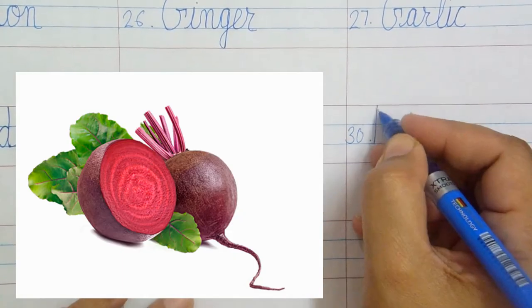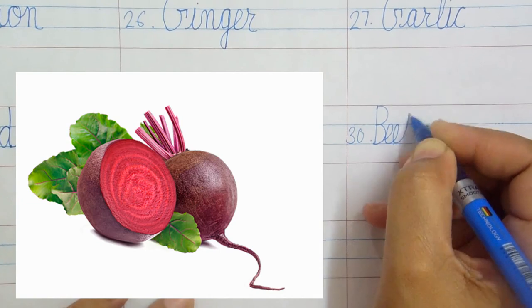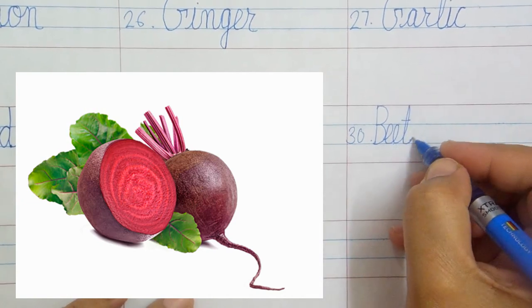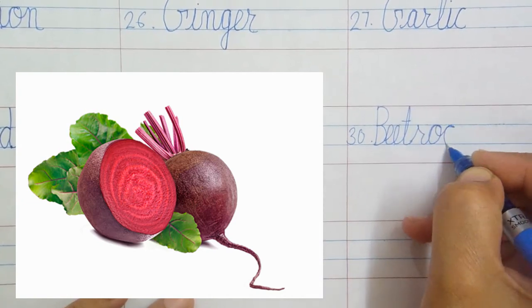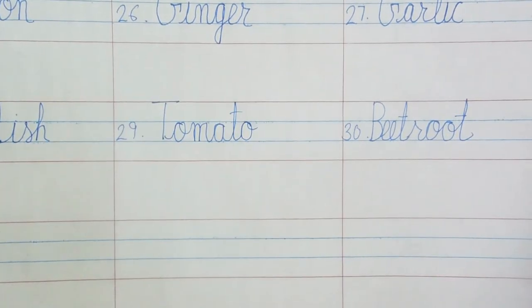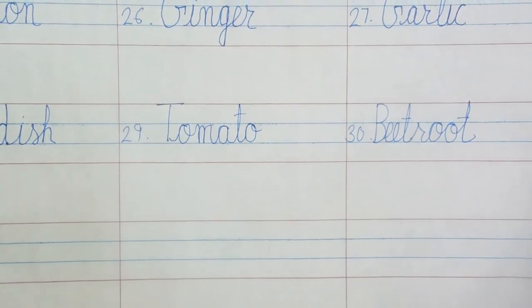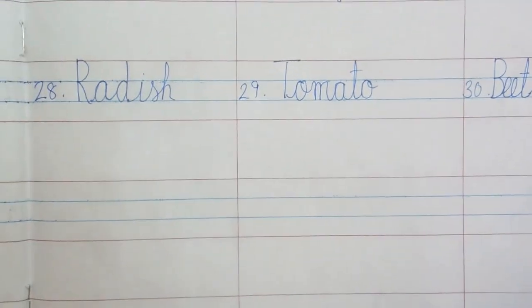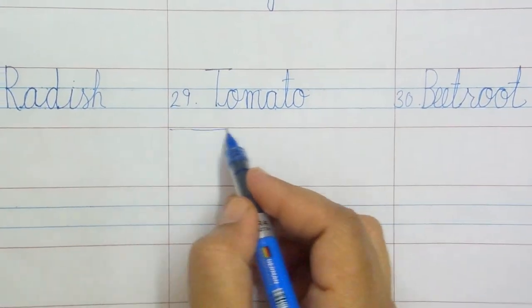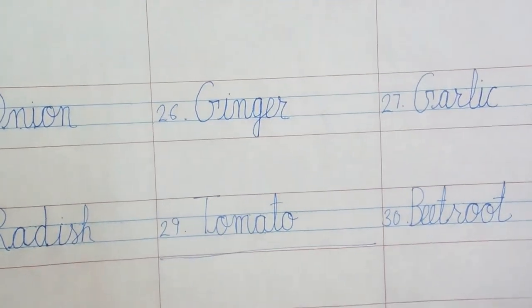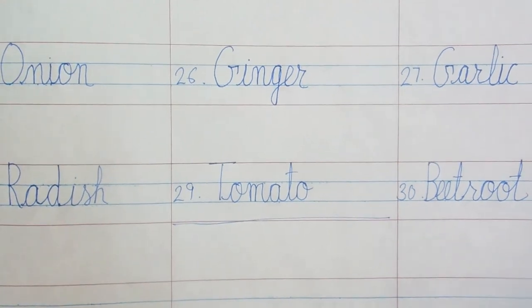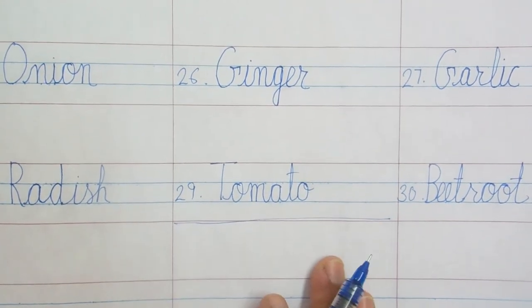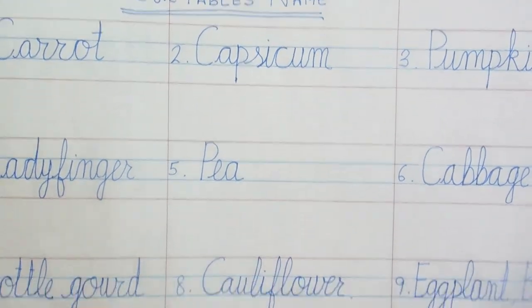Beetroot: B-E-E-T-R-O-O-T, beetroot. So friends, these are names of vegetables in cursive writing with their pictures. If you like the video, then please like and share the video and do subscribe our channel. Thanks for watching the video and keep watching for more such videos. Thank you.